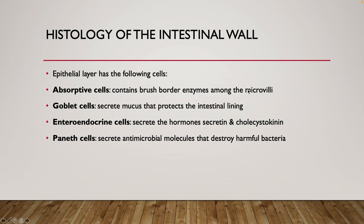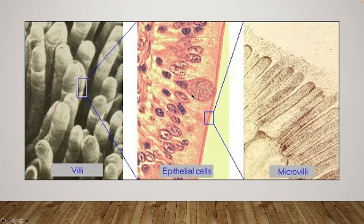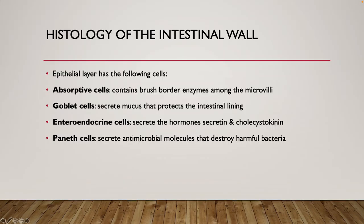Looking at cell types in our intestinal histology: we have absorptive cells, which are the ones with microvilli. We have goblet cells, which secrete mucus. The mucus being secreted in the intestines is important because material coming from the stomach has a low pH — it's very acidic — and the small intestine doesn't want to come in contact with that highly acidic content. So it secretes mucus that lines the intestinal wall, helping protect it from the incoming acidic material from the stomach.